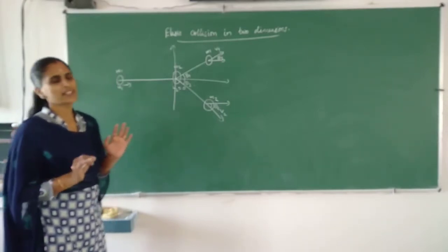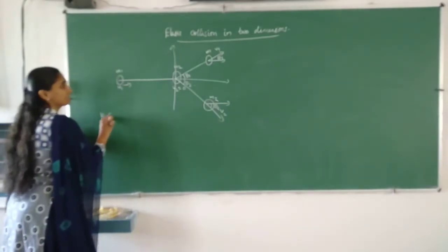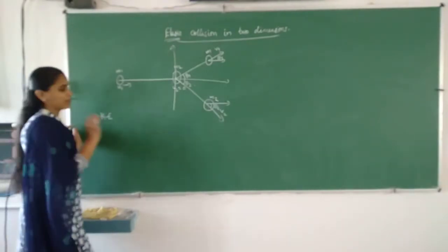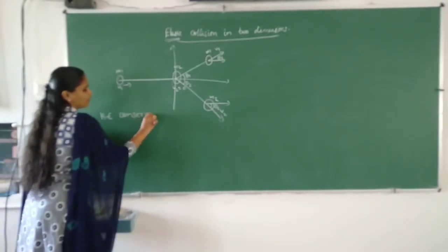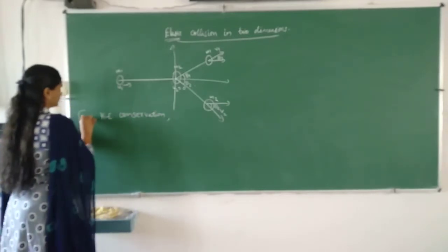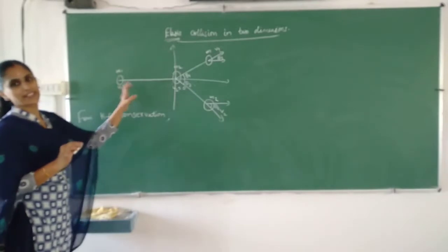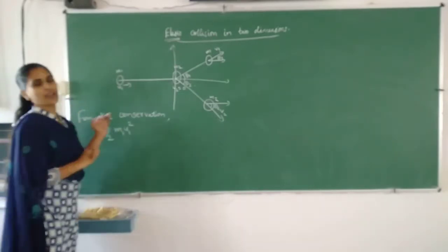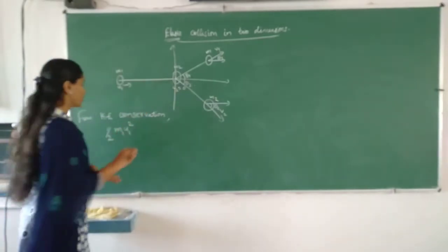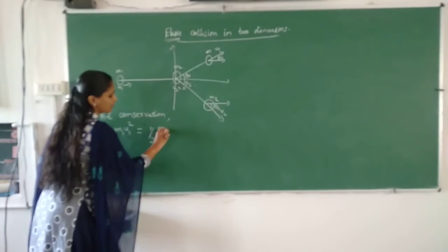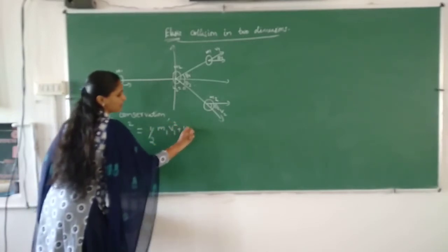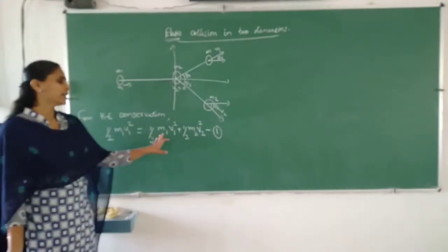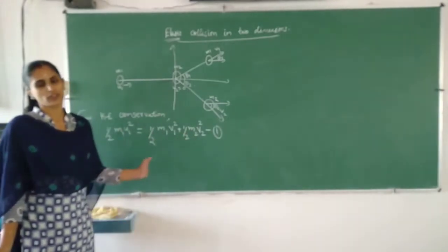The kinetic energy expression we can write very easily. Since it is an elastic collision, kinetic energy before collision and kinetic energy after collision remain the same. From kinetic energy conservation we can write: initial kinetic energy equals final kinetic energy, which is: half M1 U1 squared equals half M1 V1 squared plus half M2 V2 squared. This is our first equation.